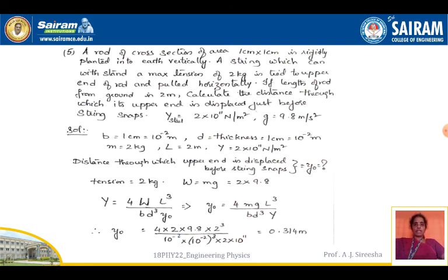This is the solution — we have determined the amount of displacement, the distance through which the upper end is displaced. It is just like a single cantilever: one end is fixed, the other is free to move. The amount of bending is calculated using the single cantilever derivation: Y₀ = 4MgL³ / (BD³·Y). Thank you.